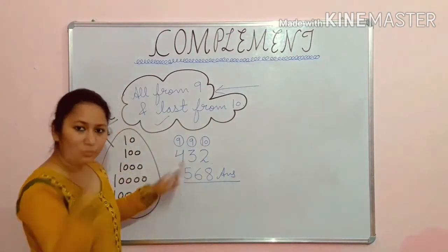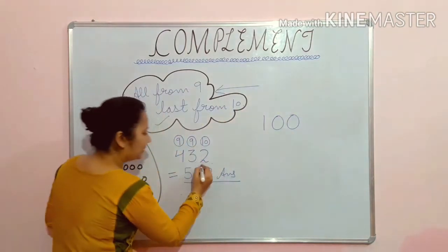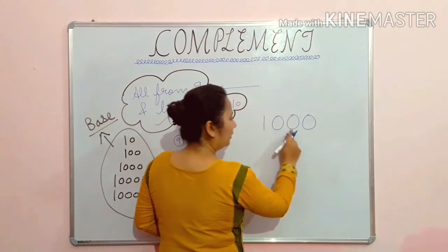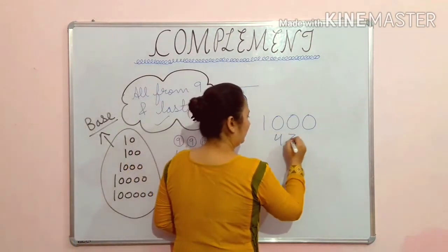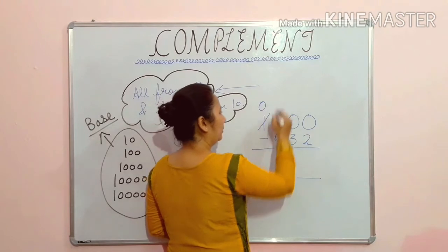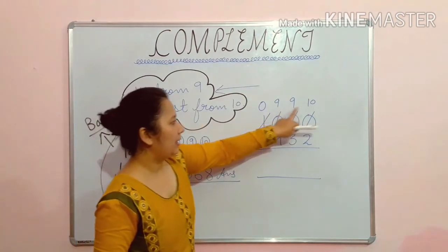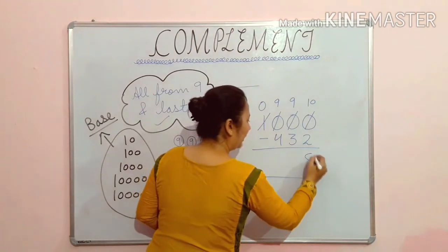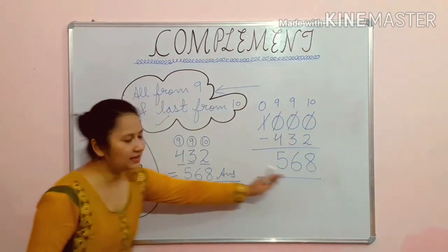Let me also show you the longer method for comparison. How many digits? 1, 2, 3. So the base will have 3 zeros. Now write your number below it and subtract: 10 minus 2 is 8, 9 minus 3 is 6, and 9 minus 4 is 5. See — same answer! Doing it the long way is harder. Vedic maths is to improve your mental ability and your calculation speed.